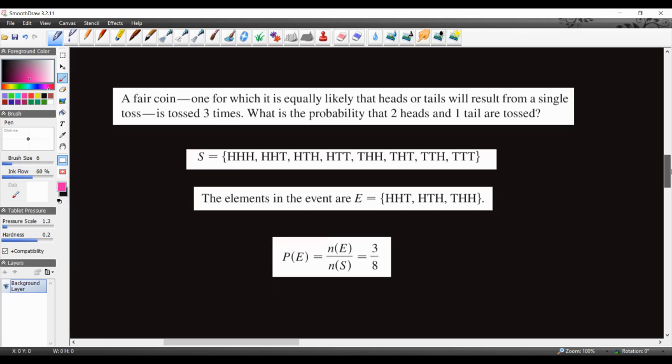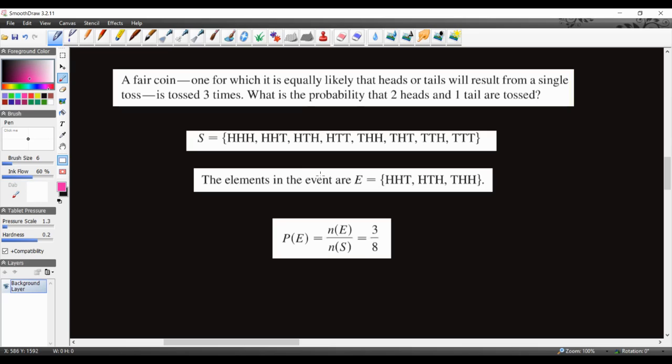Let's go ahead and look at another example. This one has actually worked out for you. I'm going to show you it and explain it the way it is and also another way to do it. So we have a fair coin, one for which it is equally likely that heads or tails will result from a single toss, and it's tossed three times. So they want to know what is the probability that two heads and one tail are tossed. So we have the following sample space. We can have that all of them come out as heads. We can have heads, heads, tail; heads, tail, heads; heads, tail, tail; tail, heads, heads; tail, heads, tail; tail, tail, heads; and tail, tail, tail. So these are all the possible combinations that we have that we can get after tossing a coin three times.